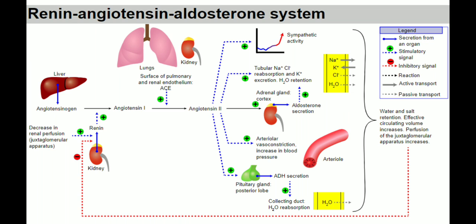When blood pressure is low, renin is stimulated, leading to high blood pressure, which then inhibits renin again. This is the whole mechanism of the renin-angiotensin-aldosterone system. The picture reference is from Wikipedia. Thanks for watching — if you like this video, share it with your friends and subscribe to the channel.